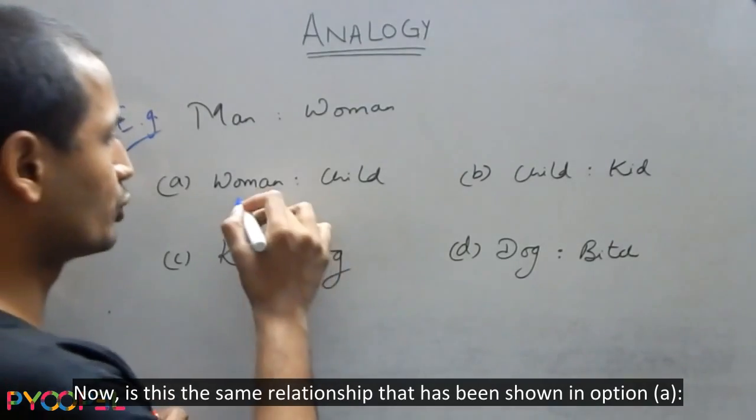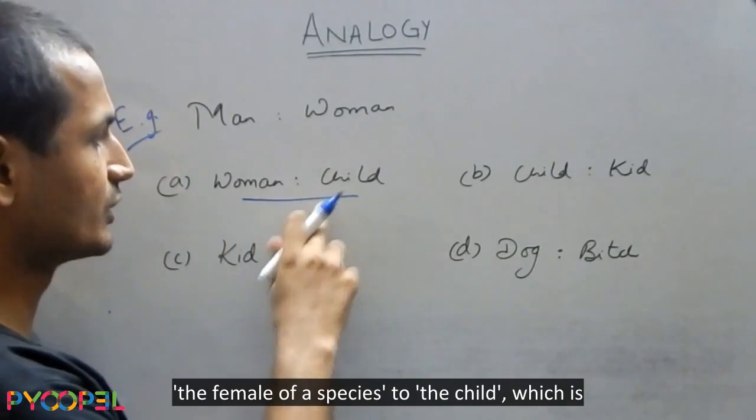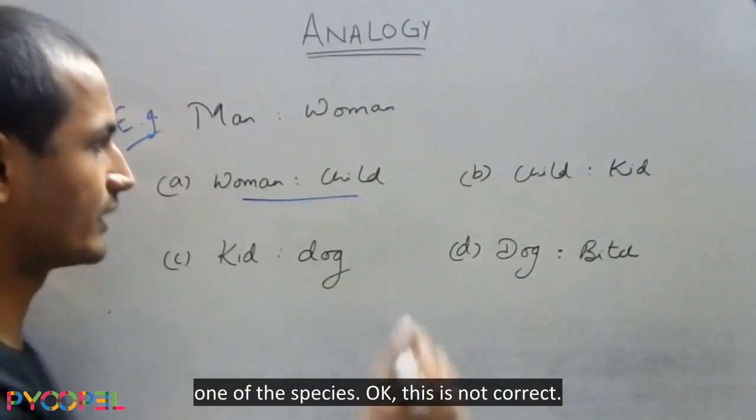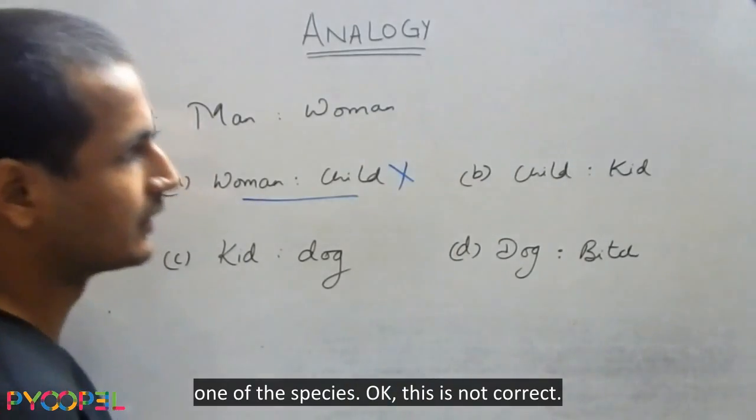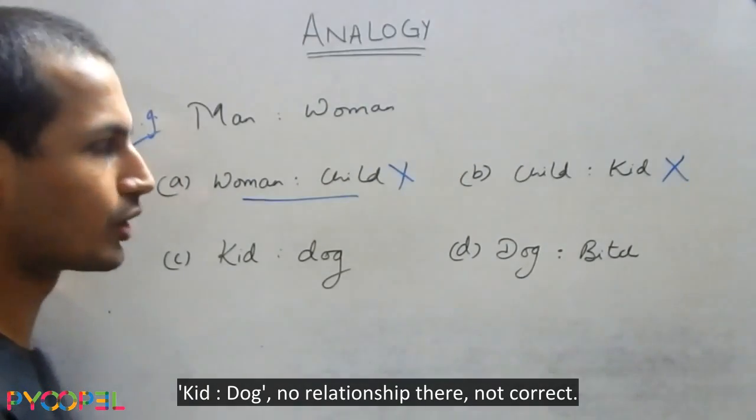Now, is this the same relationship that has been shown in option A? The female of the species to the child, which is the younger male of the species. This is not correct. Child is to kid, these are synonyms, not correct. Kid is to dog, no relationship there, not correct.